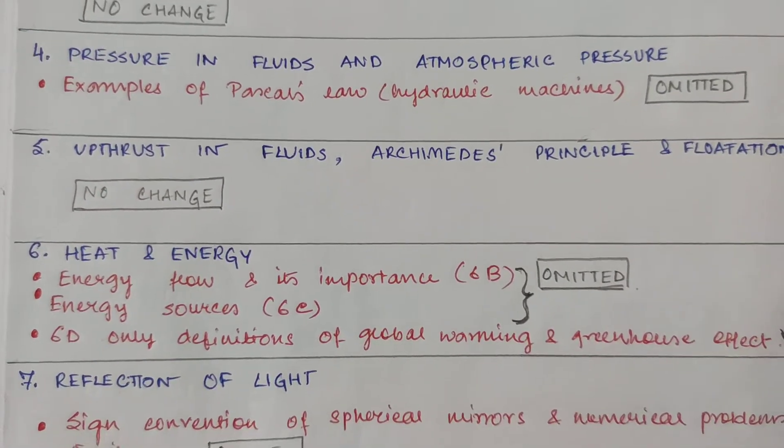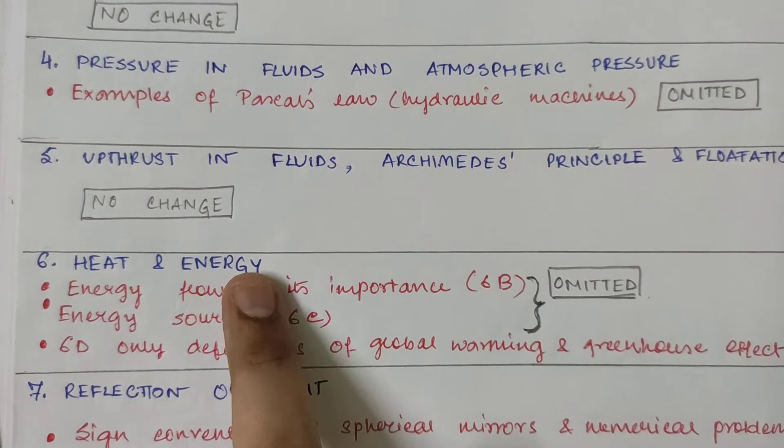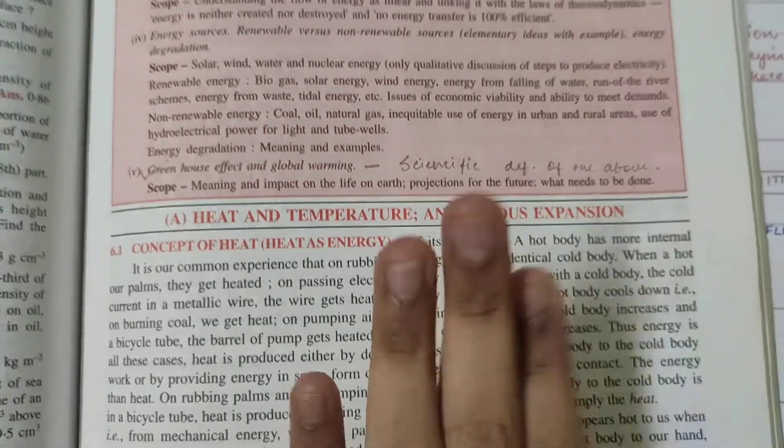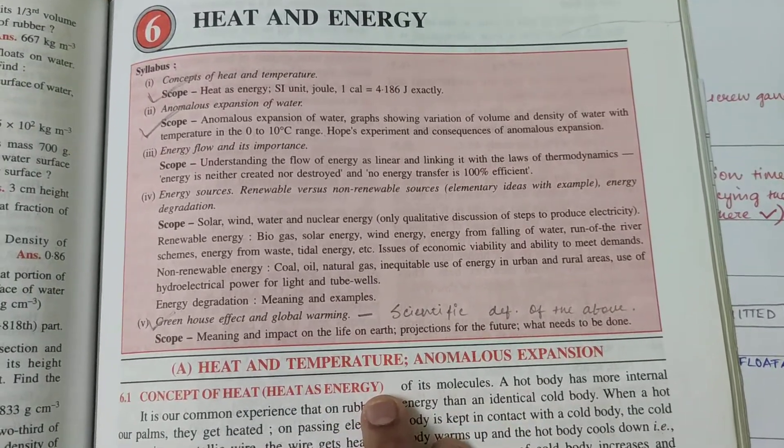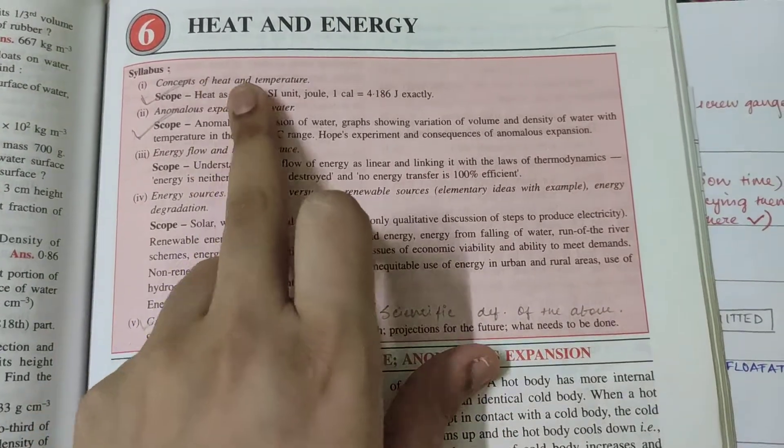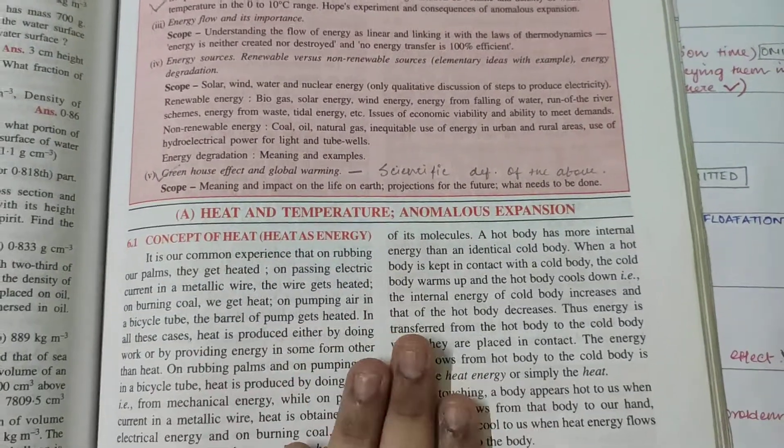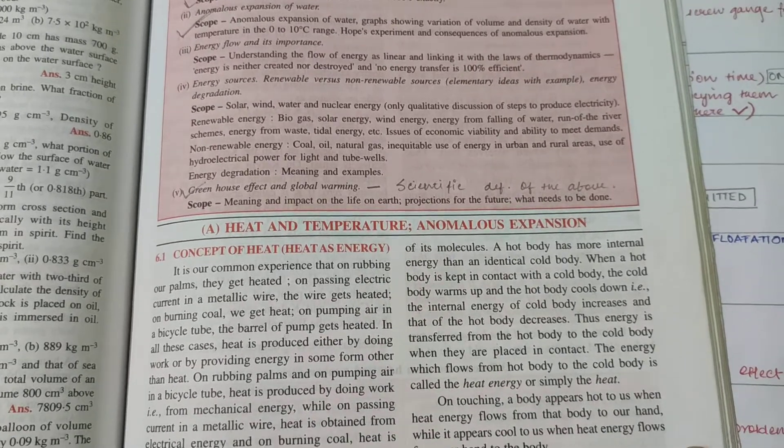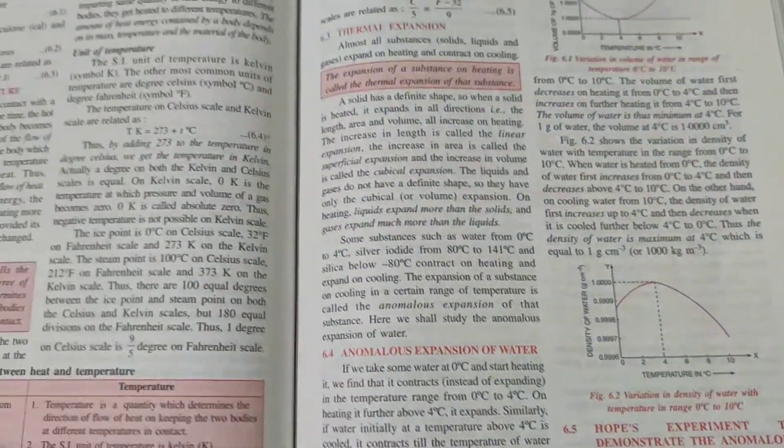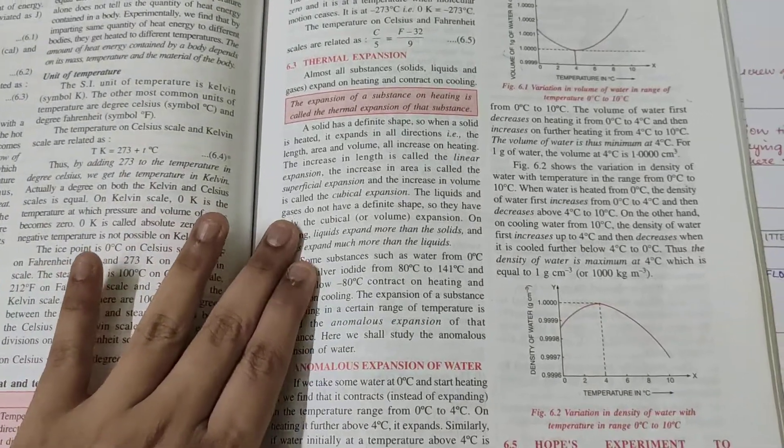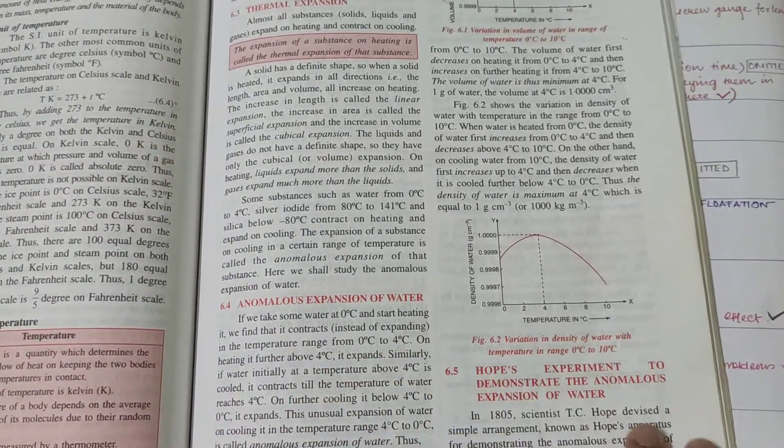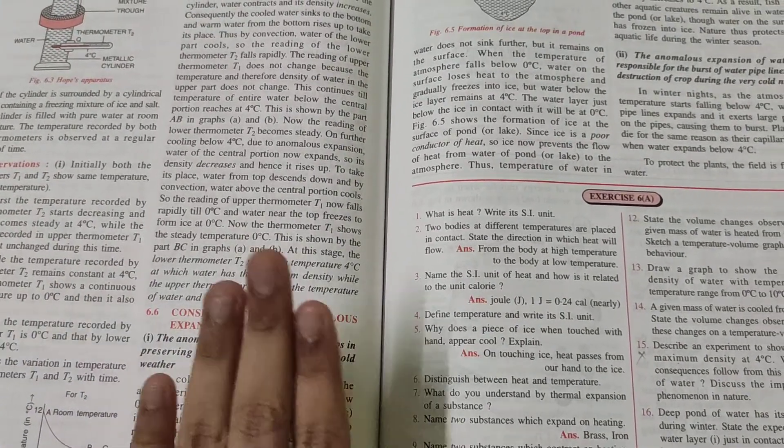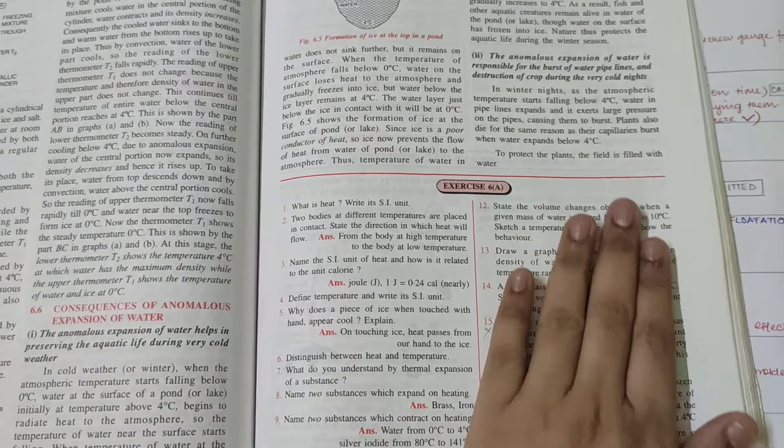Part 6, there has been a lot of reduction, heat and energy. 6A you have, that means see you have this chapter - concepts of heat and temperature, heat as energy, SI unit, this first, you have this chapter. Anomalous expansion of water also you have in your syllabus. Concepts of heat, concepts of temperature, then thermal expansion, anomalous expansion of water, Hope's experiment - we have done all this. Consequences of anomalous expansion of water, all these things. Basically you have this chapter, 6A, full.